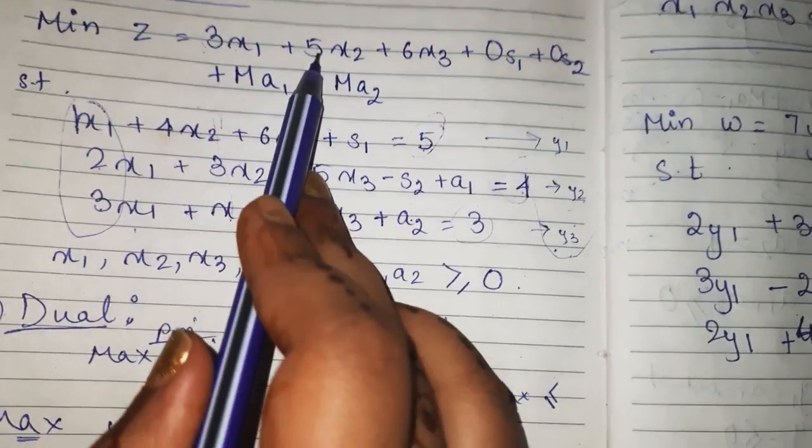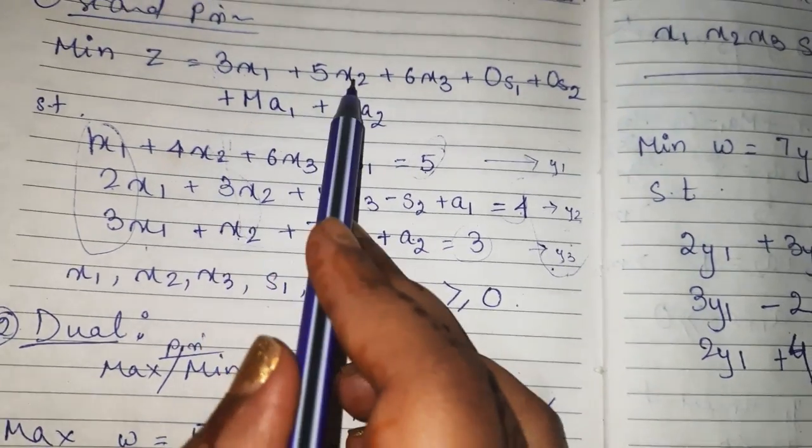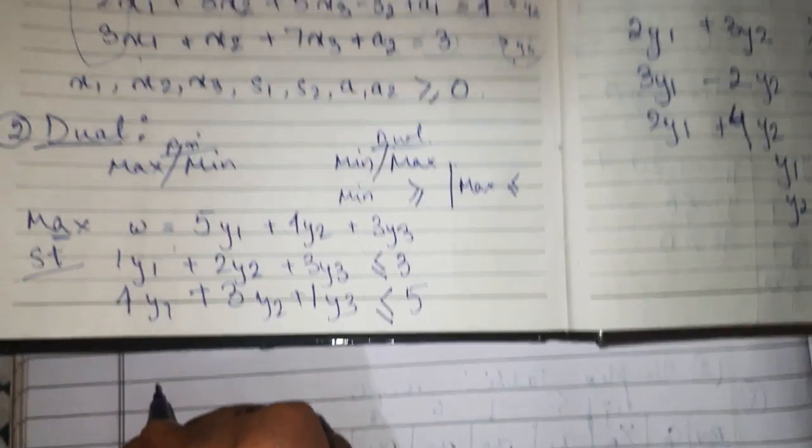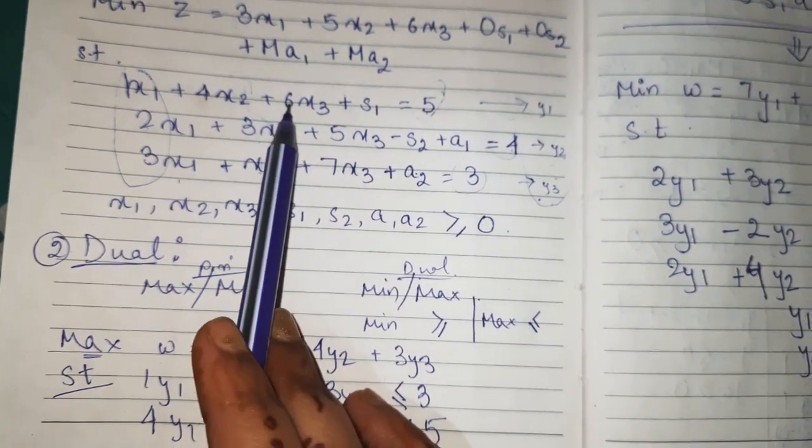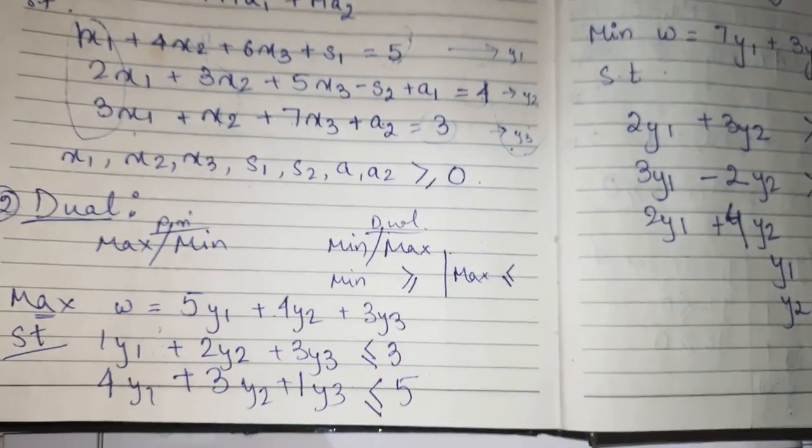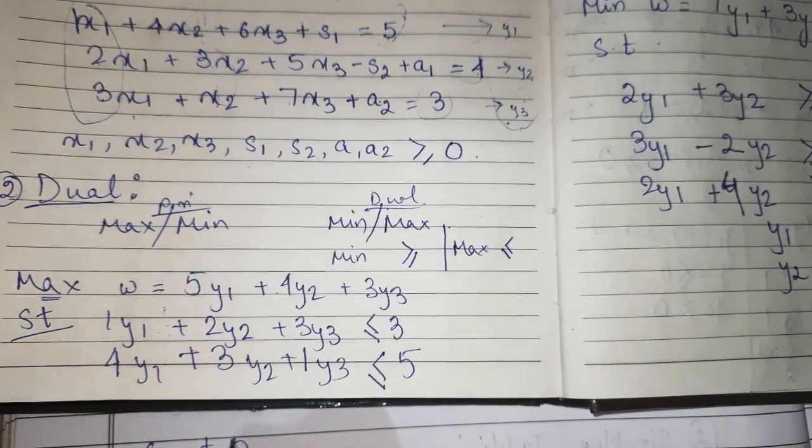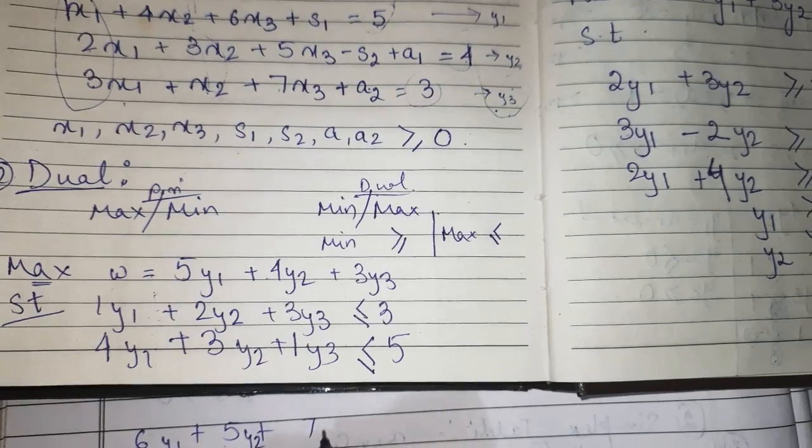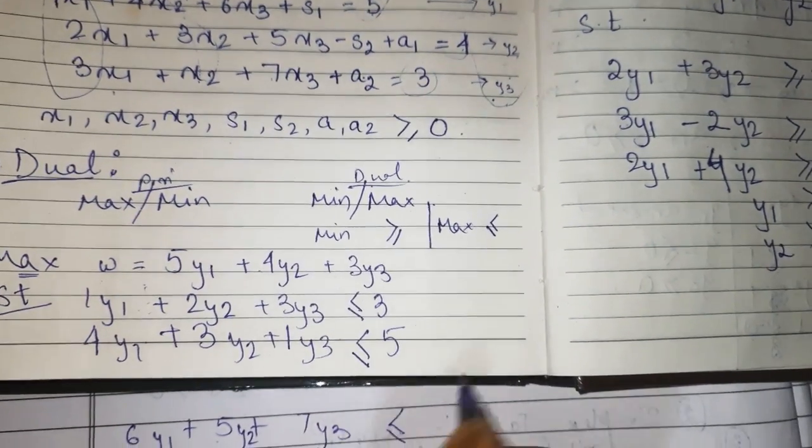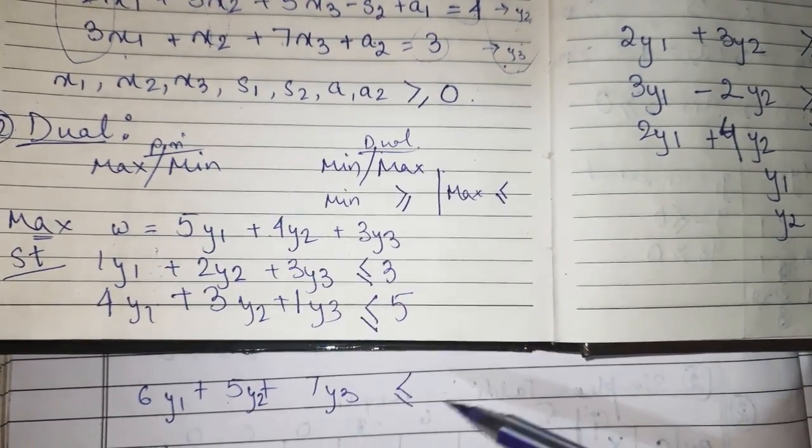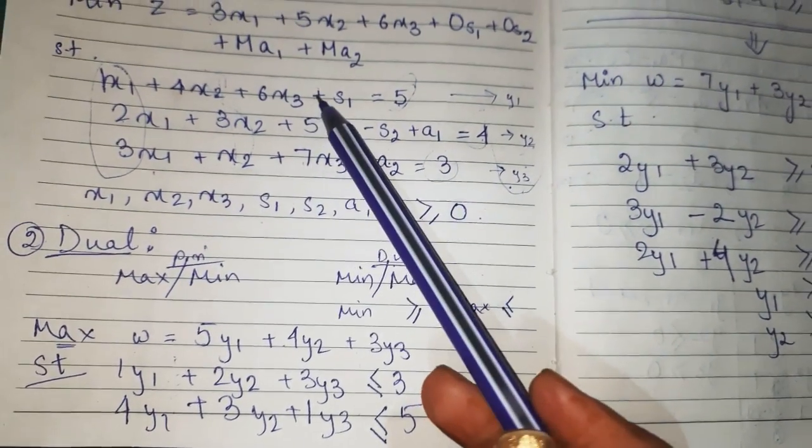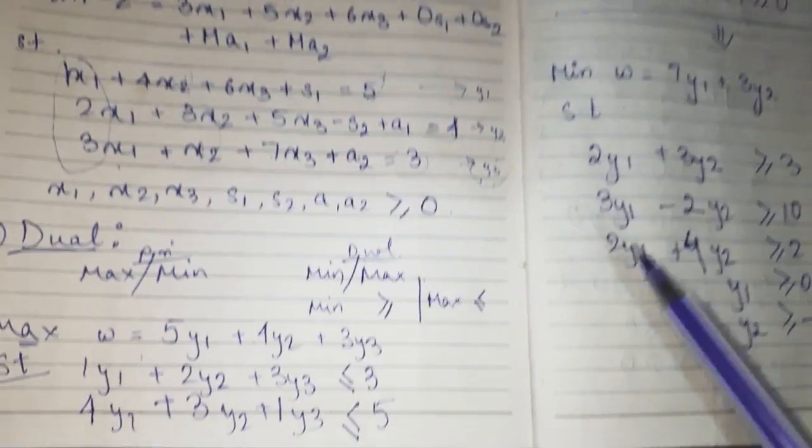For x2 it is 5. Similarly for third constraint it is 6, 5, 7: 6 plus 5 plus 7, y1 y2 y3 is less than or equal to, because for maximization we do less than or equal to. For x3 it is 6.